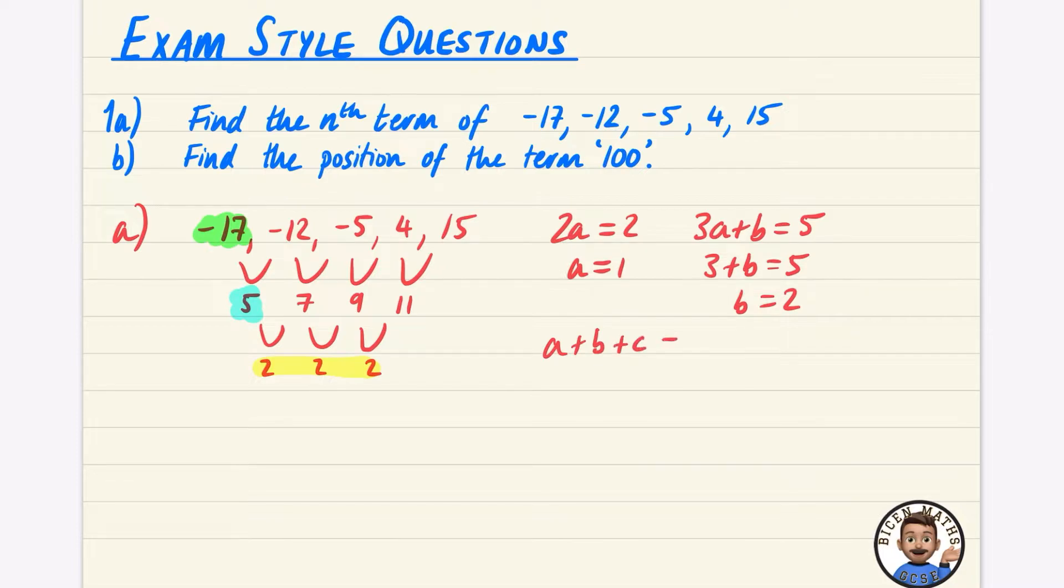And then my first term, a plus b plus c is equal to -17. So 1 plus 2 plus c equals -17. So 3 plus c equals -17, and subtracting the 3, c is equal to -20, meaning that the nth term is n squared plus 2n minus 20.